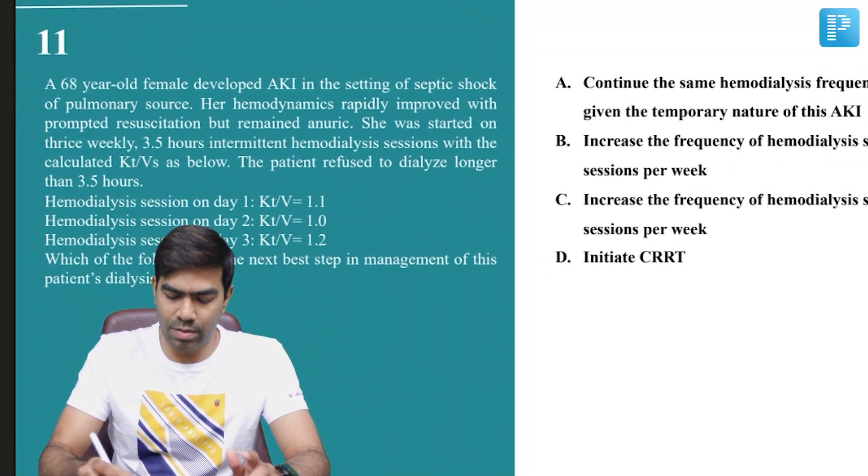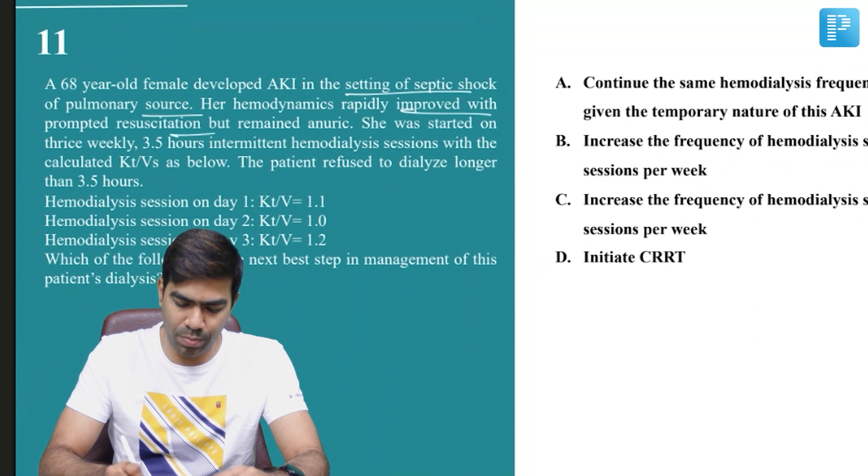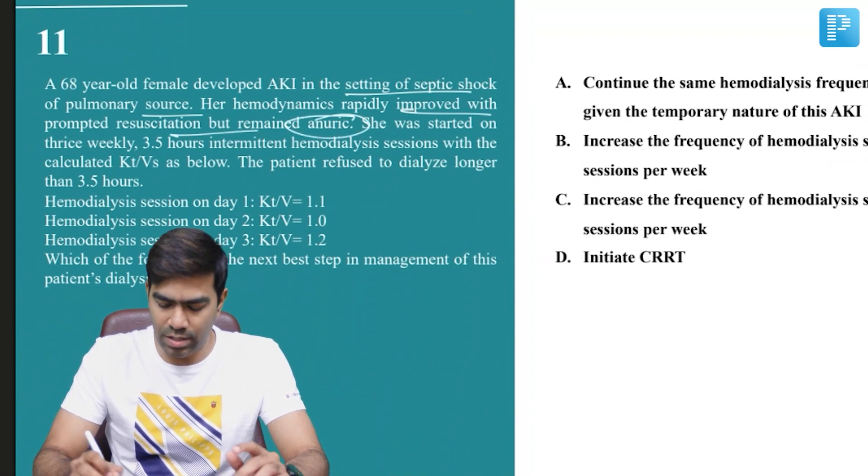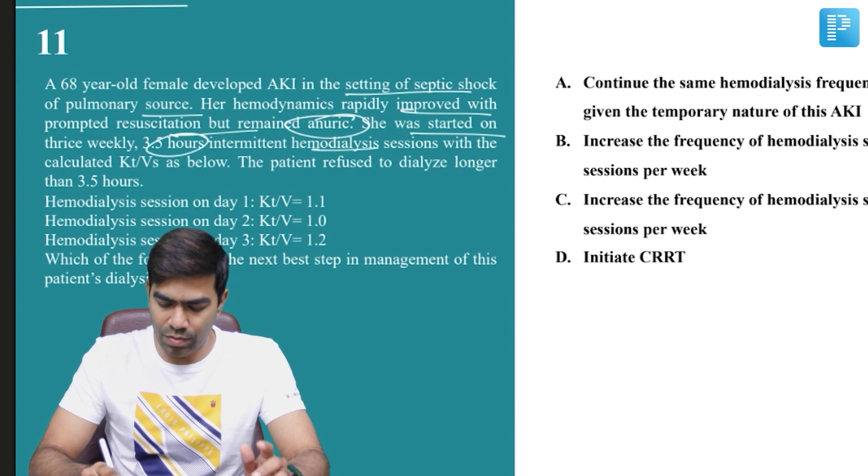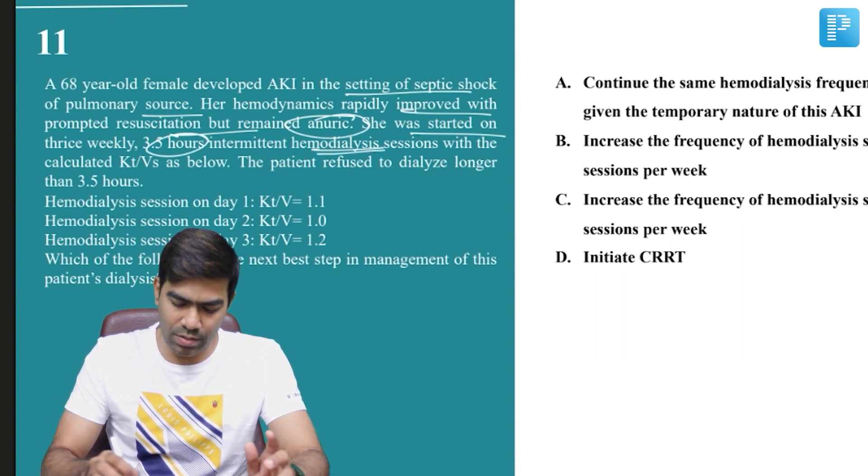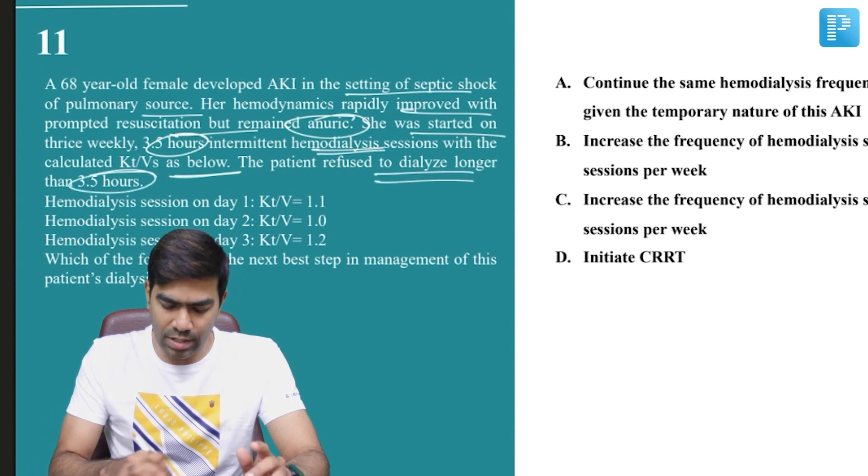Here is a 68-year-old female who developed AKI in the setting of septic shock of pulmonary source. Her hemodynamics rapidly improved with prompt resuscitation, but she still remained anuric. She was started on thrice-weekly, three-and-a-half-hour intermittent hemodialysis sessions.